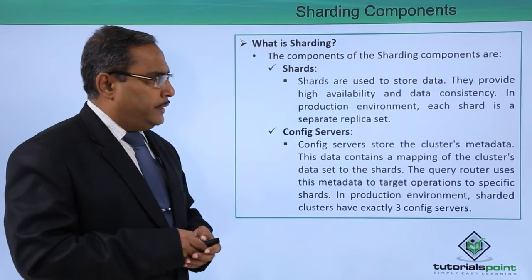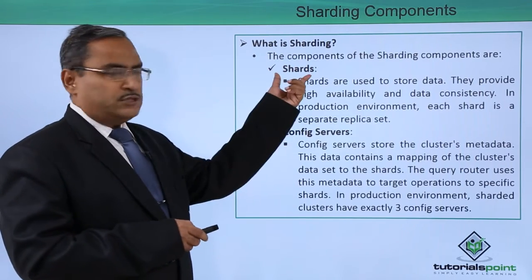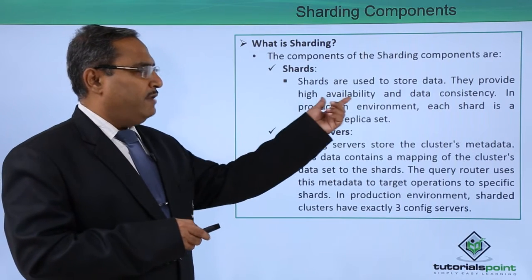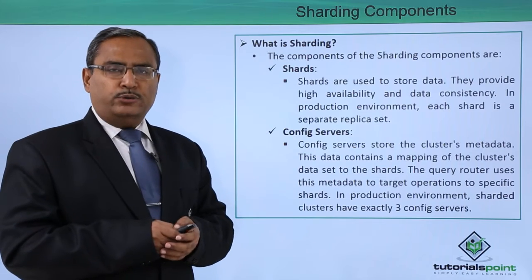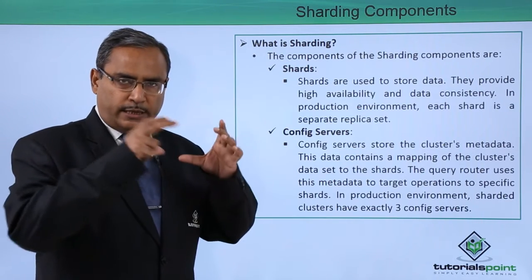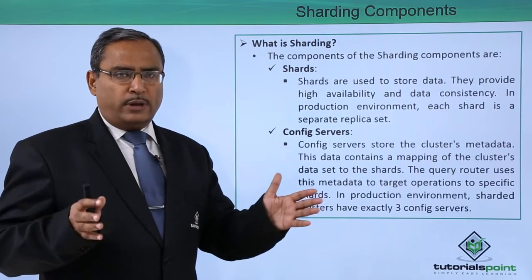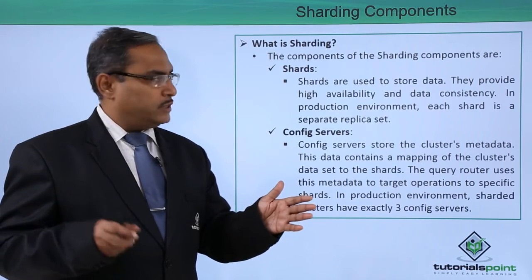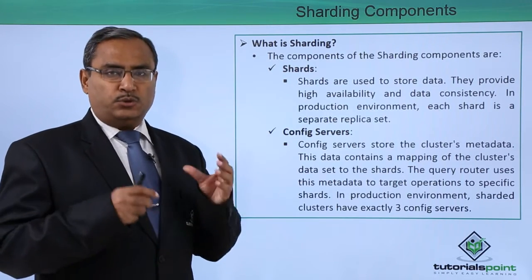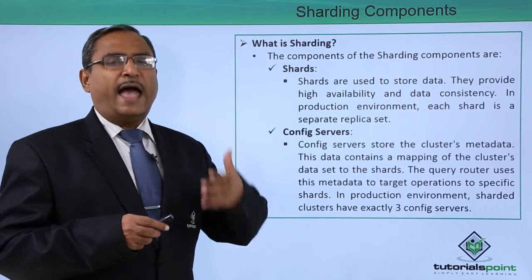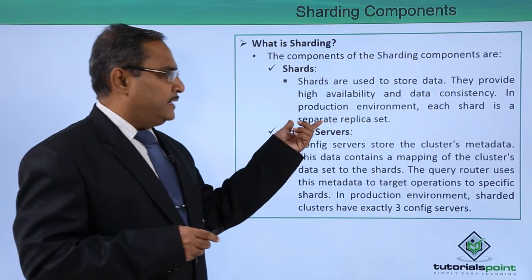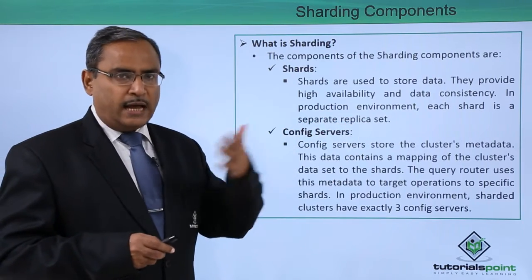The first sharding component is the shards, and shards are used to store data. They provide high availability and data consistency. In the same shard cluster, we are having multiple shards — they are nothing but replica sets. One primary node and multiple secondary nodes are there, and these secondary nodes will contain a replica of the data, so that it enhances the availability of the data. In a production environment, each shard is a separate replica set.